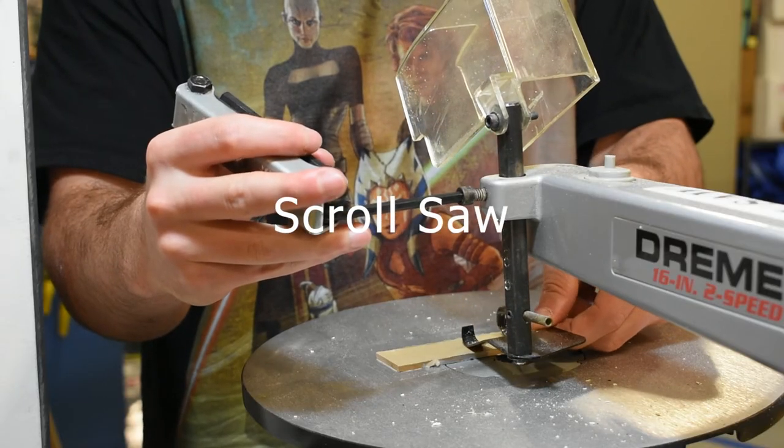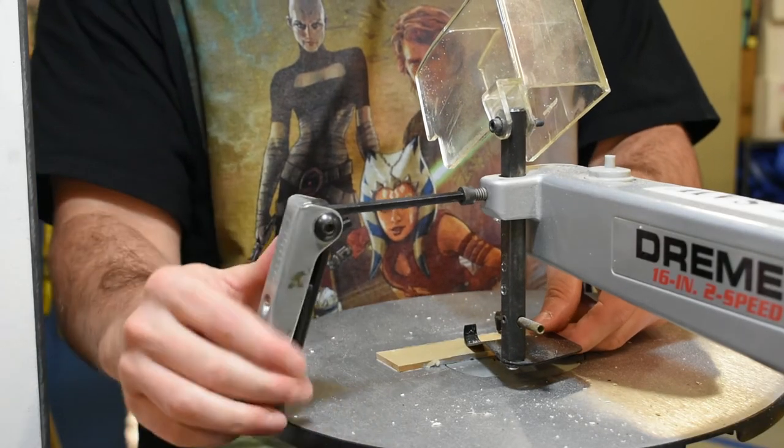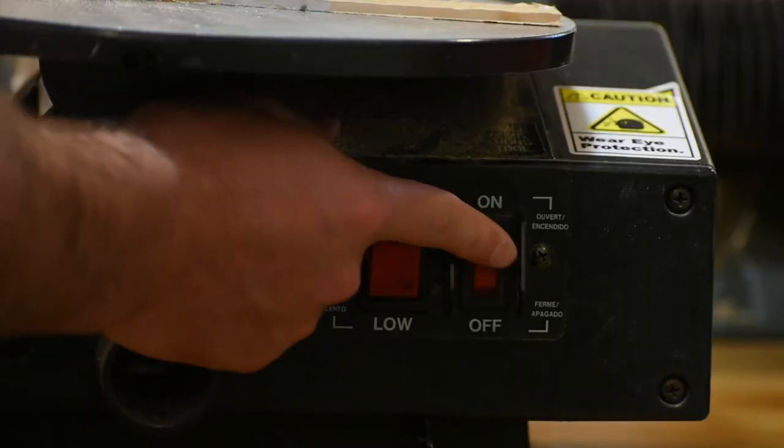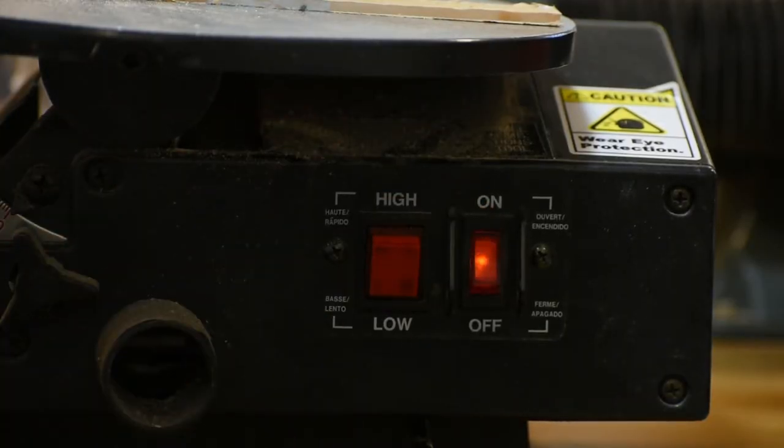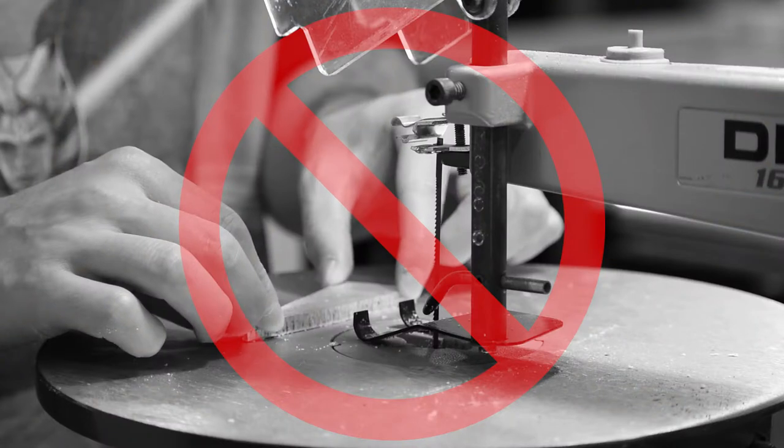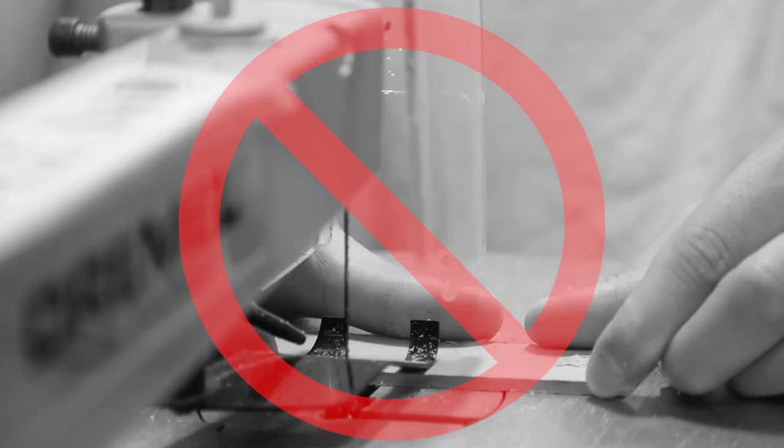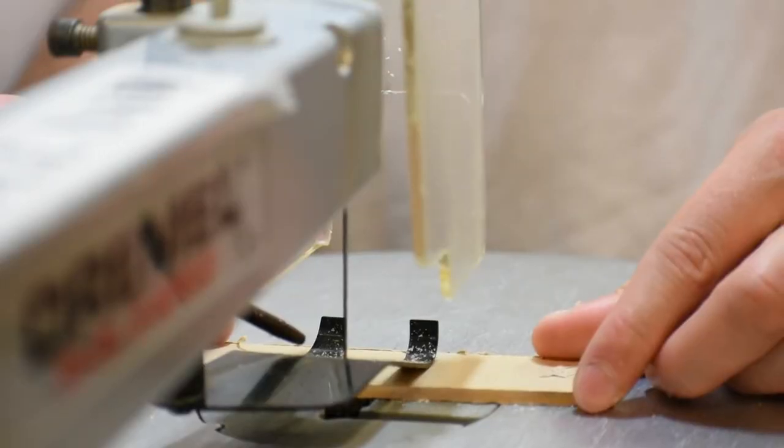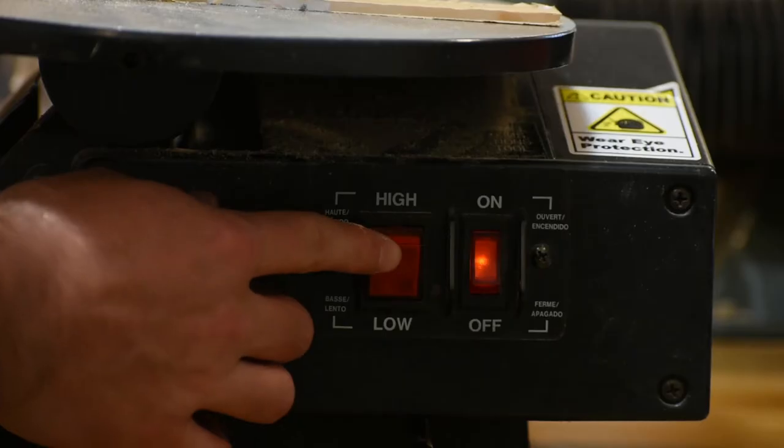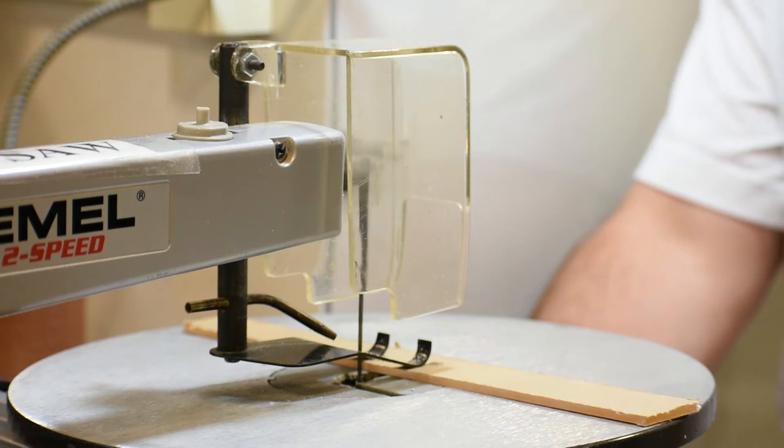This is the last saw, I promise. The scroll saw is used to make precise cuts. Wood and plastic can be used, but not metal. The machine is too delicate. Before cutting, remove your hand from the cutting plane and adjust the speed. Then it's time to cut.